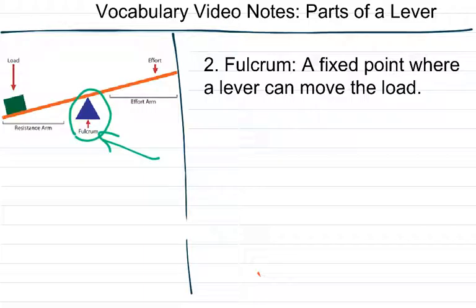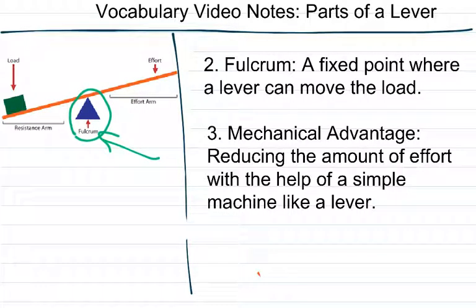Alright, let's move on to number three. The last point for today is mechanical advantage. We read about that today. So mechanical advantage is just when humans have figured out how to reduce the amount of effort with the help of a simple machine like a lever.